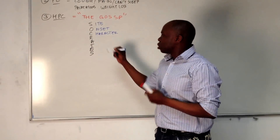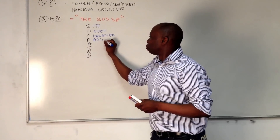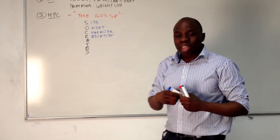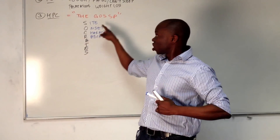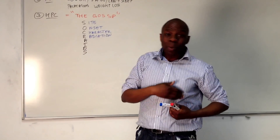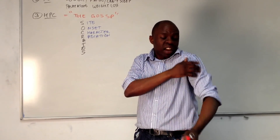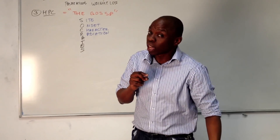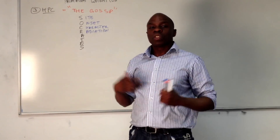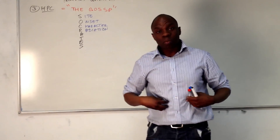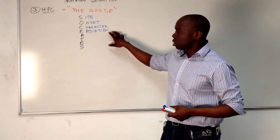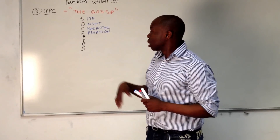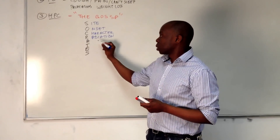Then we go on to radiation. When you get the pain at the site you've identified, does it go anywhere else? Does it travel up and down your left arm, for example? Or is it one of those pains which just stays in one place? Radiation tells us as doctors — because we know about the nervous system and where nerves go — quite a lot of useful information about what might be happening.